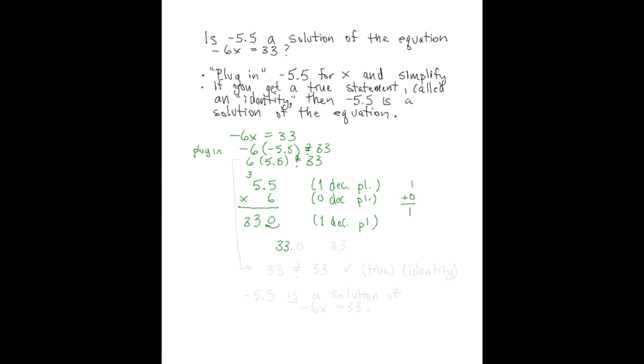We would write it 33.0 if it wasn't for the fact that in mathematics, we disregard 0s that are to the right of the last digit in a decimal. So we can just say that this is 33.